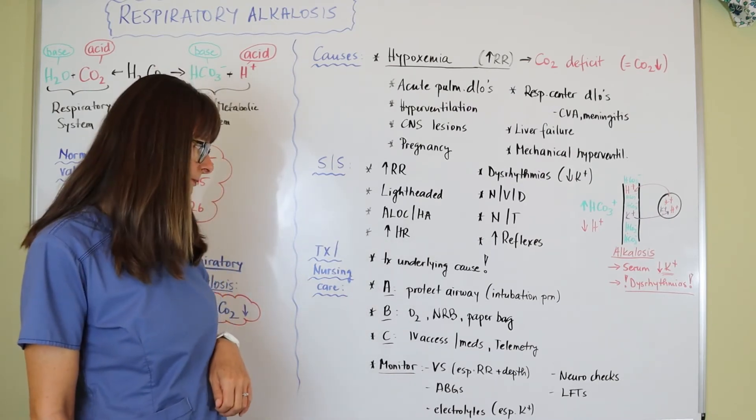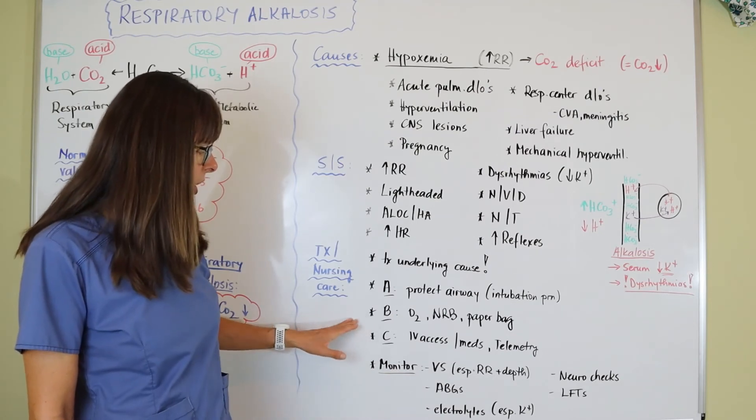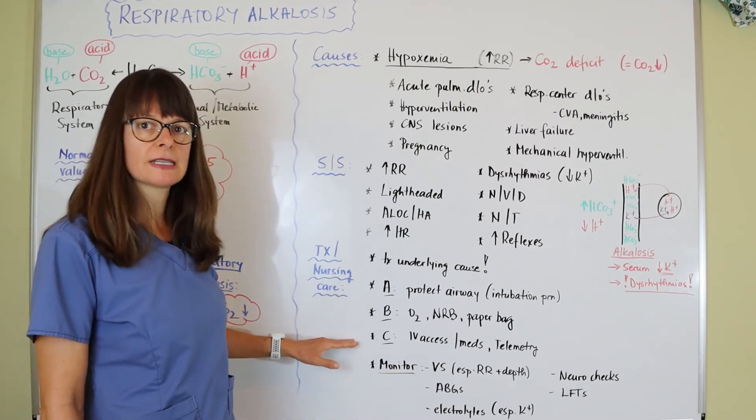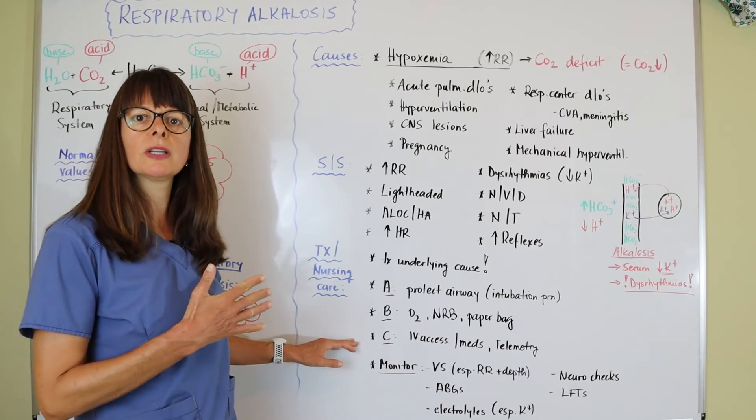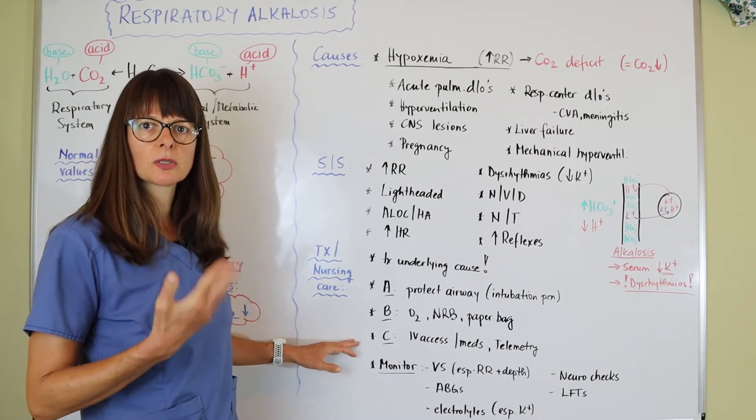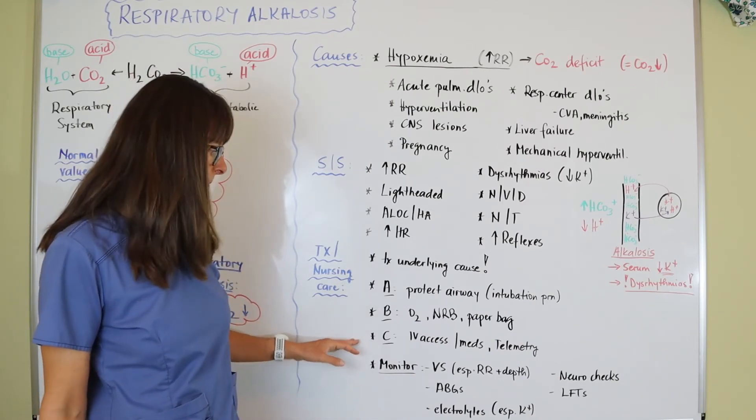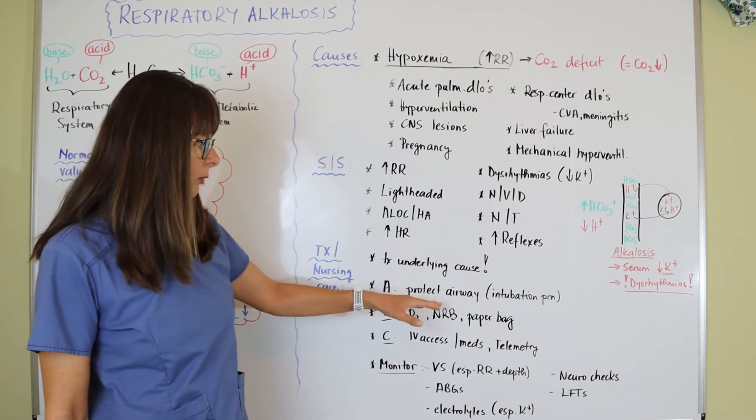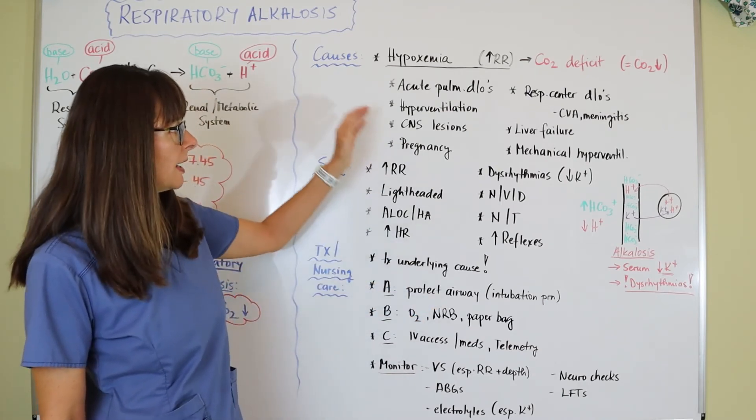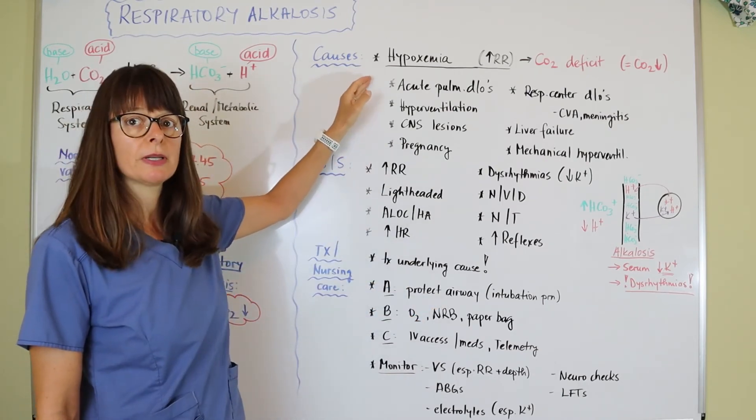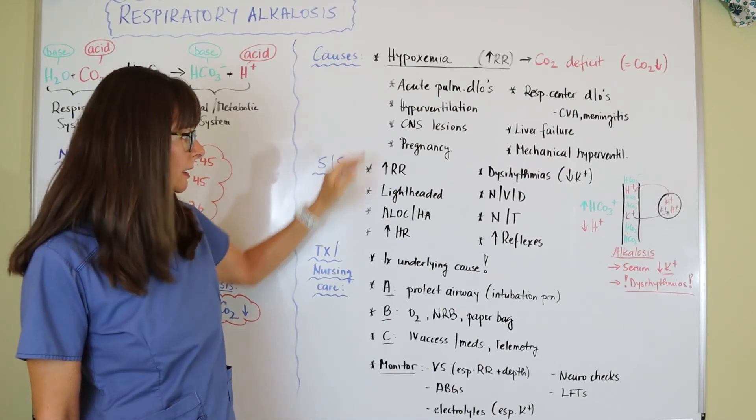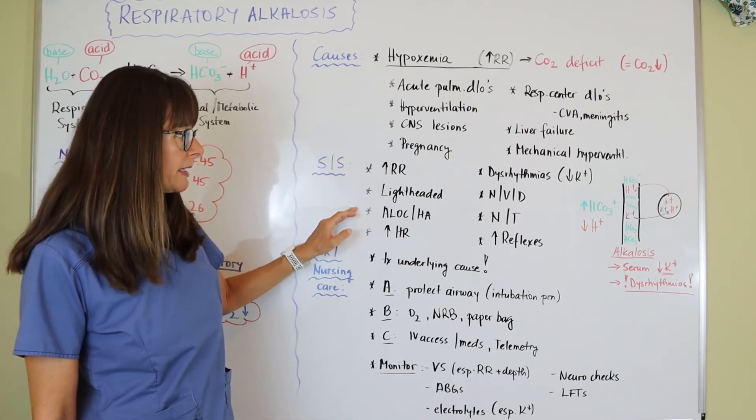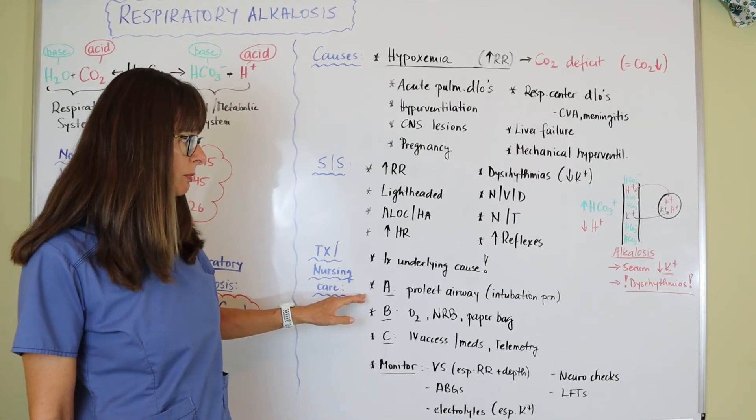For nursing care, always think about your ABCs. That helps not only here in acid-base disorders but also for any kind of exam. Airway: protect the airway. If this patient is having an acute pulmonary embolism and they're altered and cannot maintain their airway, they're going to need to be intubated.